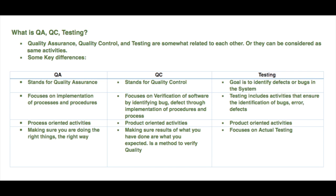QC focuses on verification of software by identifying bugs and defects through the implementation of procedures and processes. Testing includes activities that ensure the identification of bugs, errors, and defects. QA is process oriented, QC is product oriented, and testing is also product oriented.